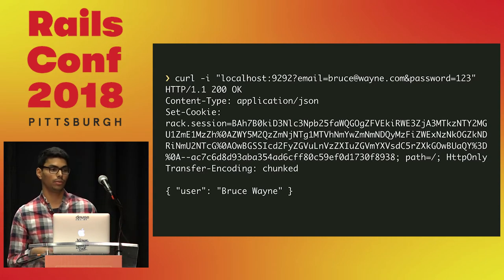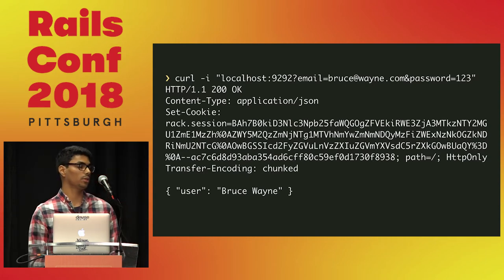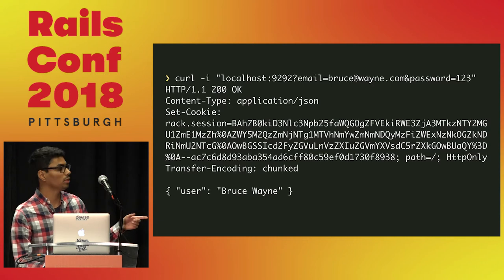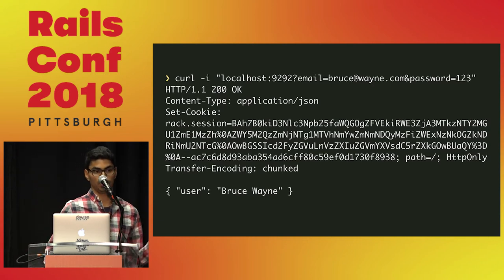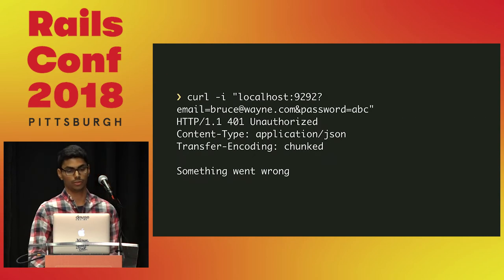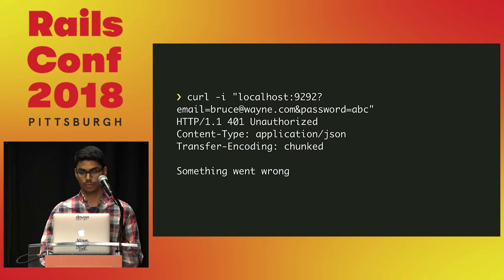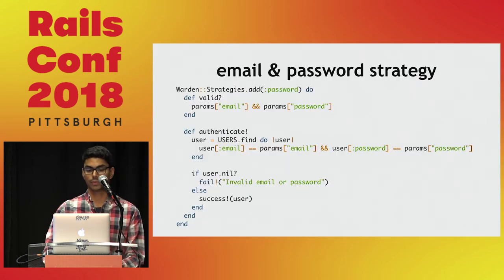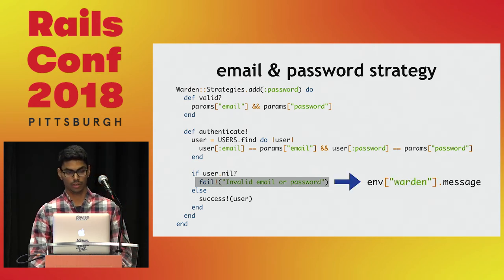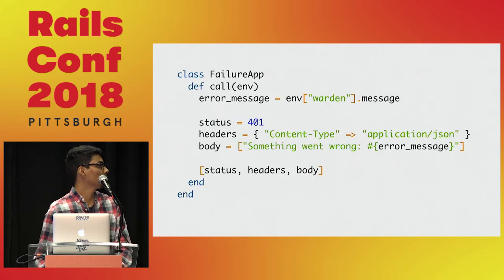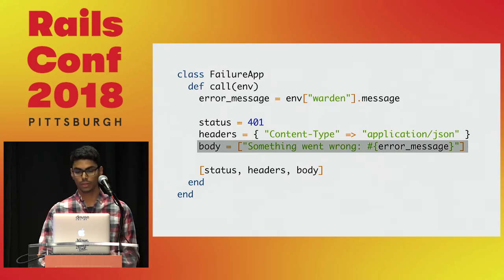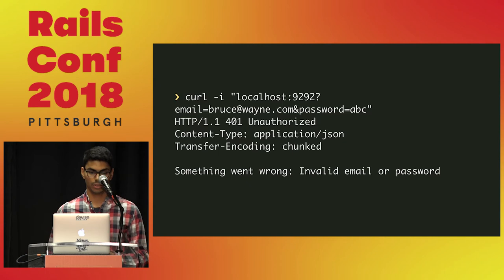If we send a request with a valid combination of email and password, we get our desired response — the user is Bruce Wayne — and we also have the Set-Cookie header in the response, which the browser uses to keep the user authenticated. But if we pass a wrong password, we get our failure application's response: 401 Unauthorized and 'something went wrong.' We can also grab the fail message from the strategy — it gets stored on the Warden object under the message method — and return it in the failure app body.